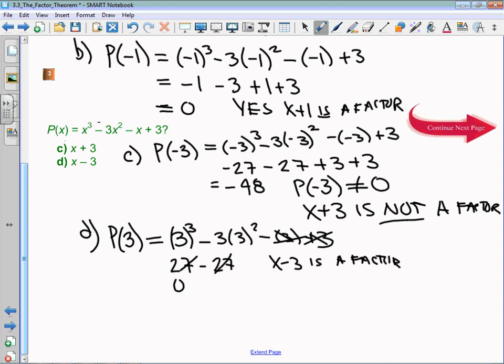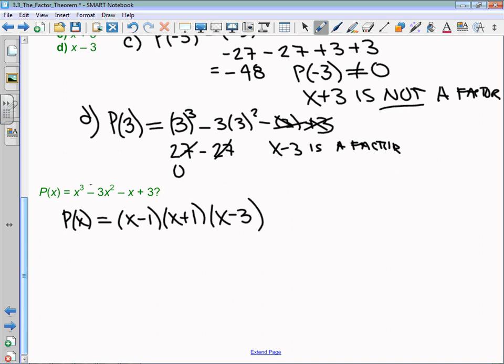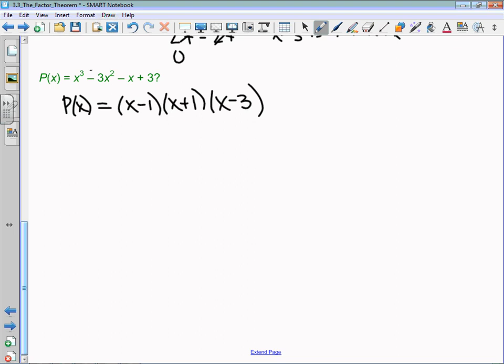I want to do something with this to make sure we see the point. We just found out that P(x) has three factors: x minus 1, x plus 1, and x minus 3. If we want to make sure we've done this right, we could simply expand the right-hand side. Expanding, x minus 1 and x plus 1 is a difference of squares, so I have x squared minus 1 times x minus 3. That's equal to x cubed minus 3x squared minus x plus 3.